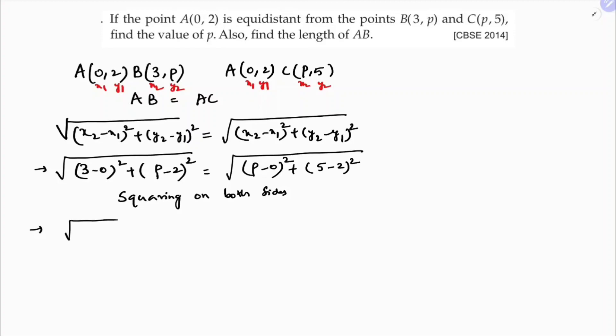So under root 3 minus 0 is 3 and P minus 2, so here whole square. That equals P minus 0 is P. 5 minus 2 is 3 square.